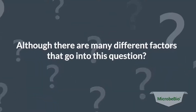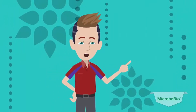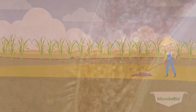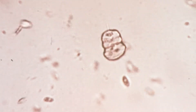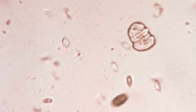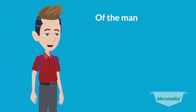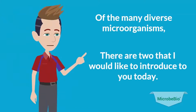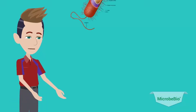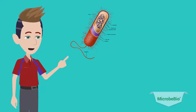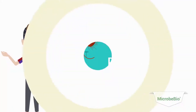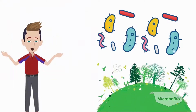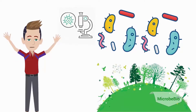Although there are many different factors that go into this question, one of the most important aspects to look at is the soil in which the vegetation is growing. In soil there are unseen inhabitants — microorganisms that live and develop within the earth. Of the many diverse microorganisms, there are two I would like to introduce today. First, there is a single-celled minuscule microbe called bacteria. We are solely focusing on the beneficial ecological aspect of this microorganism.